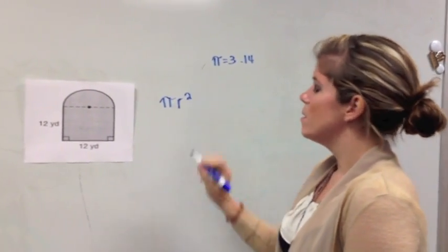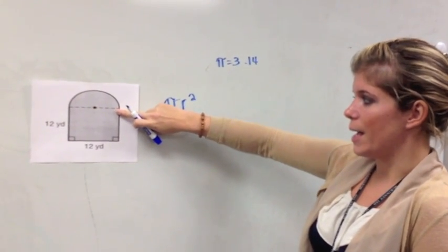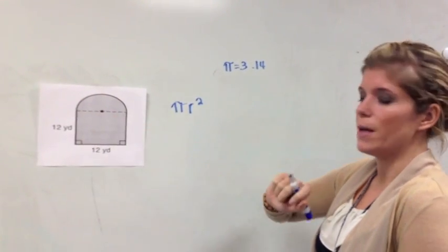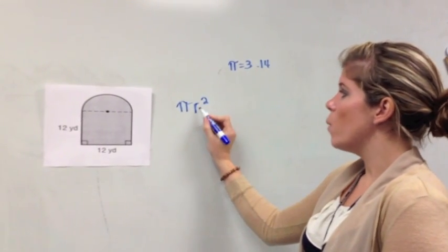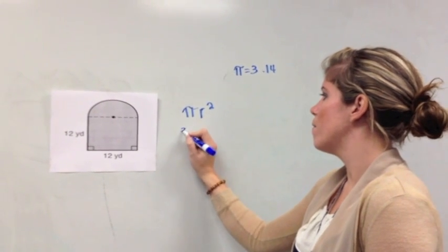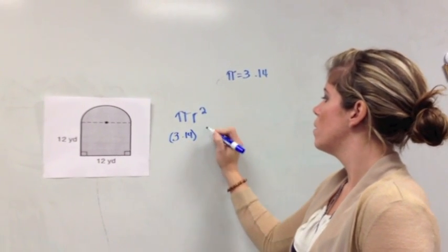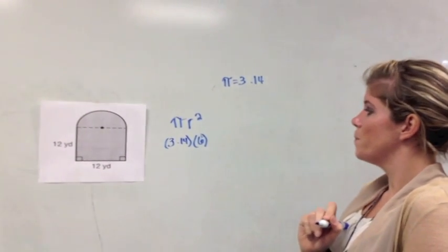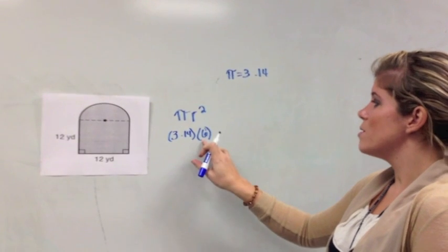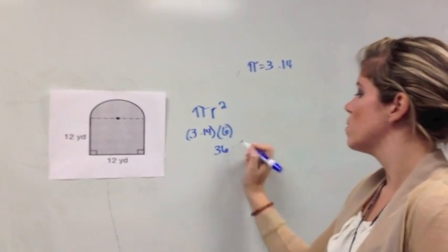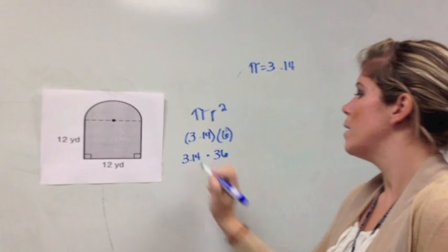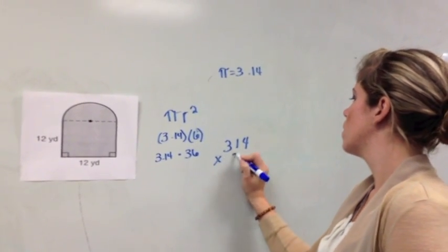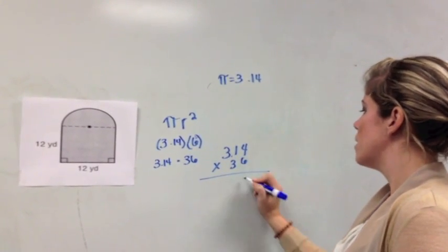Our radius is half of our diameter, and our diameter here is 12. Because if I look down here, it's the opposite side of that square. So half of 12 is 6. So I now have 3.14 times 6 squared. 6 squared is 36 times 3.14. Now I just do my basic multiplication with decimals. 4 times 6 is 24.